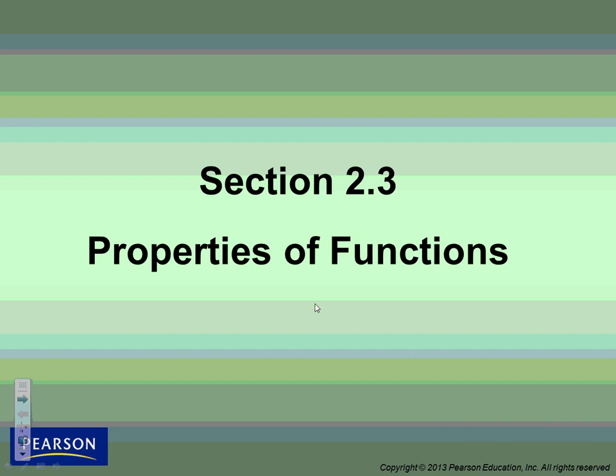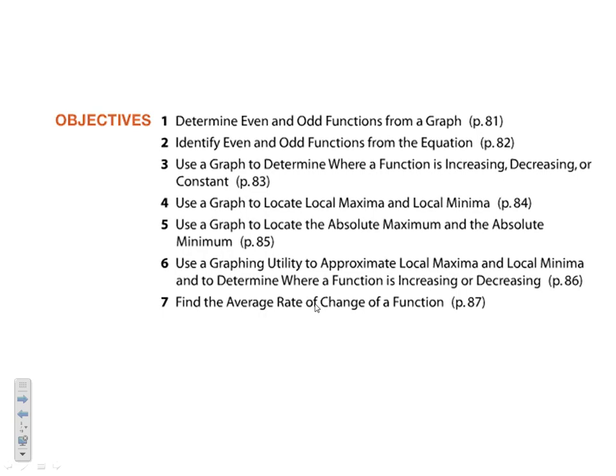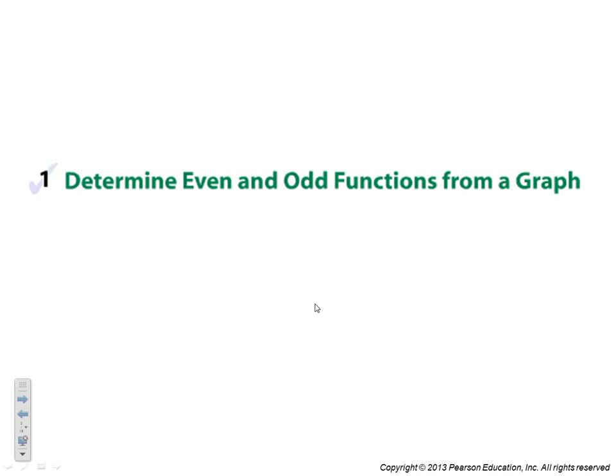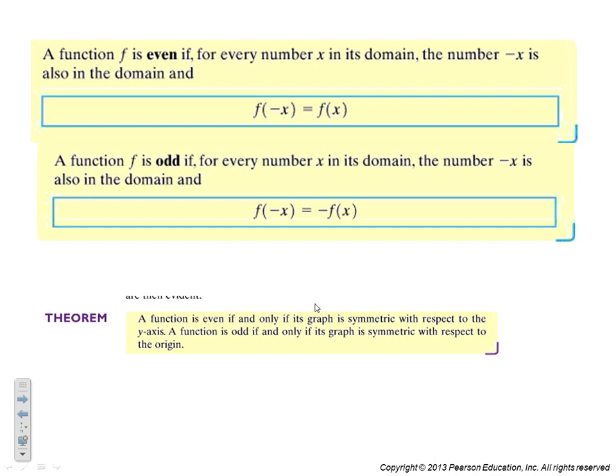This is section 2.2, Properties of Functions. We're going to look at odd and even functions, increasing, decreasing, or constant, local max and min, absolute max and absolute min and how we use a graphing utility to find that, and then end with the average rate of change.